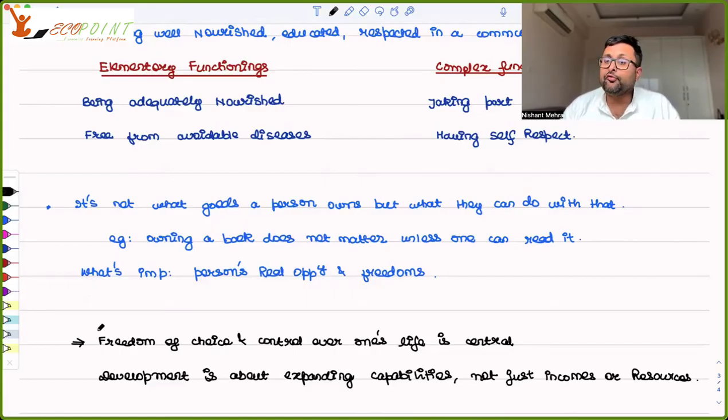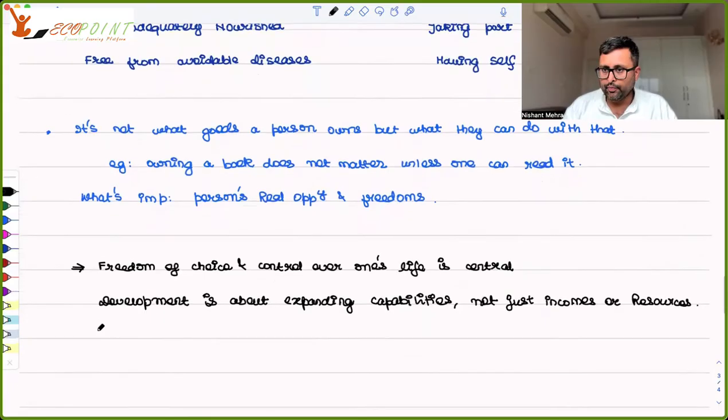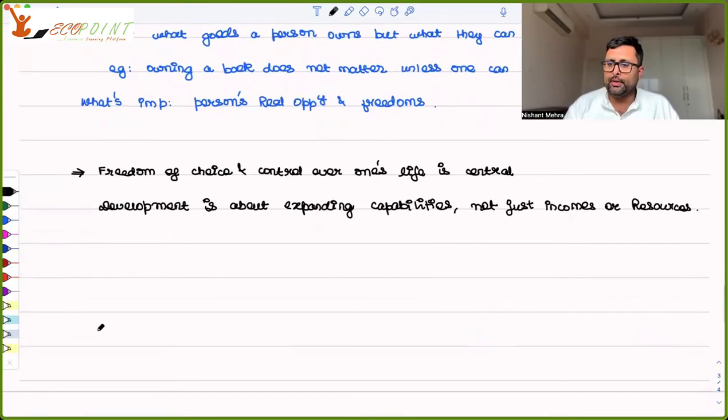So this is what he says. He says that you should have a freedom, freedom of living the life you want. Development is not just about expanding resources or income. It is about expanding capabilities - what you can do with these income or resources. And then he says this, that even if two people have same income, then the real ability to lead a good life, that is functioning, is very, very different. Because it all depends upon the personal, social, and environmental factors.